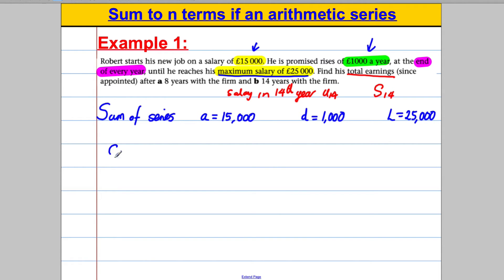Let's start off by writing Sn. Sn is equal to n over 2, 2a plus n subtract 1 multiplied by d. And we are working out S14. So S14 is going to equal 14 divided by 2, 2a is 15,000. So 2 multiplied by 15,000 plus n minus 1, which would be 13, multiplied by the common difference, which is 1,000.